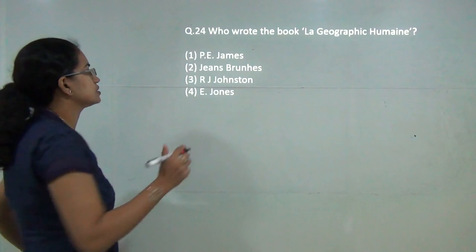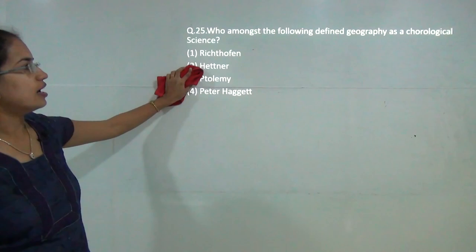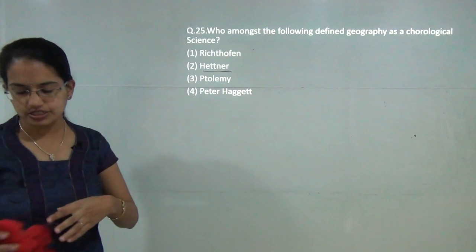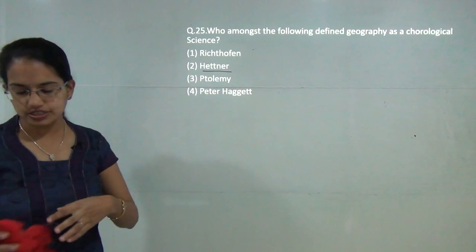The next is La Geographie Humaine is the book that has been written by Brunhes. Brunhes is the correct answer here, again a very direct question. And finally, geography was defined as a chorological science by Hettner. The correct answer again here is 2, that is Hettner.